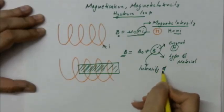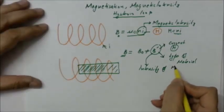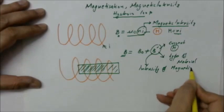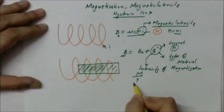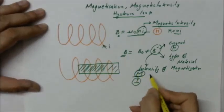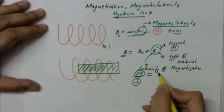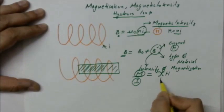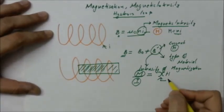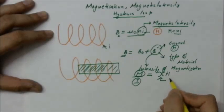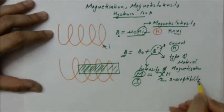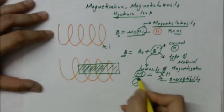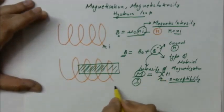Intensity of magnetization — some books write it as I, some books write it as M. M is equal to χH, where χ is the susceptibility of the material to magnetization.